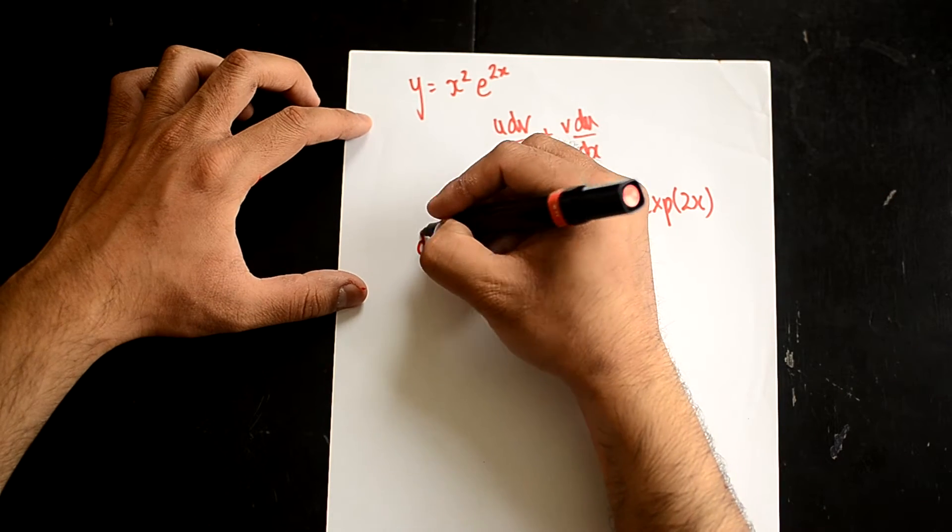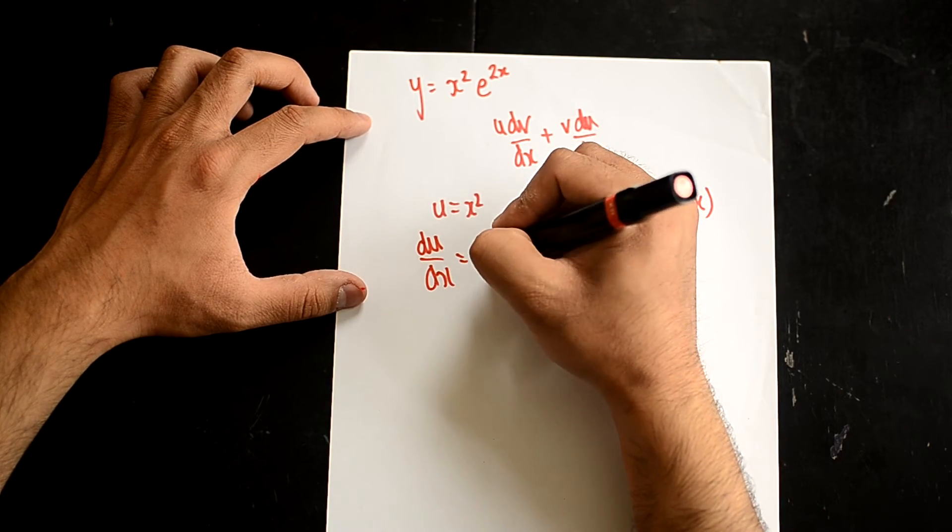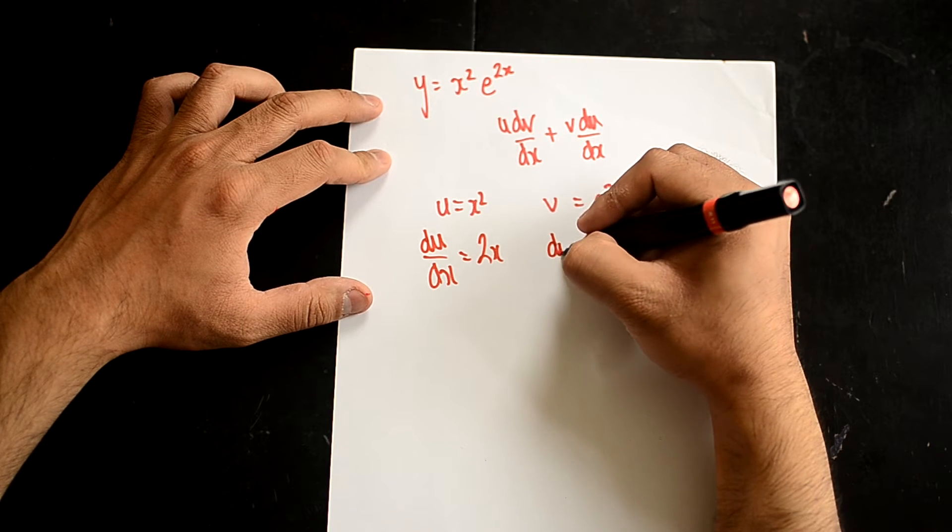So, anyway, I'll differentiate u, which would be du/dx. Very simple differential, which is 2x. But then, now we're going to do dv/dx.